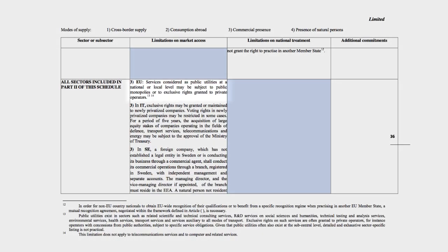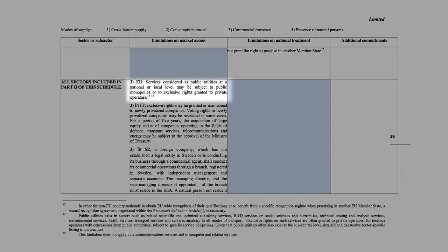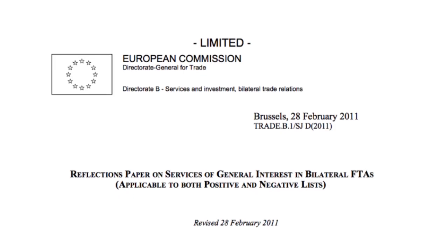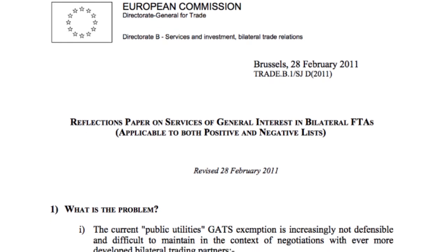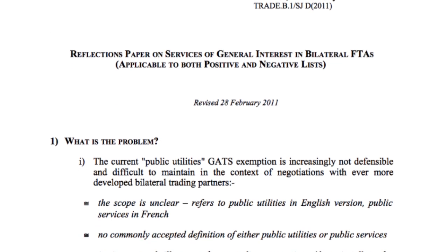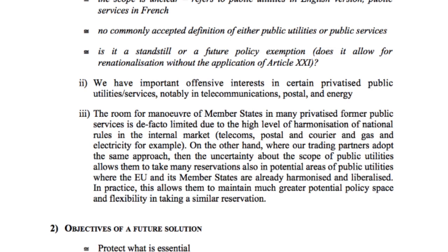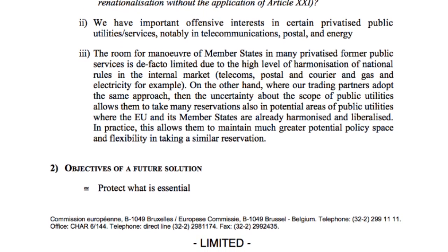What about the Public Utilities Exemption? This is another one the European Commission introduced once they realised the original GATS exemption didn't work. The Public Utilities Exemption can be read on page 36 of the TTIP schedule and page 38 of the TISA schedule. It says that public utilities might still be subject to public monopolies or to exclusive rights granted to private operators. The European Commission says that proves public services are safe. However, back in 2011, the European Commission had already written its own internal documents saying that exemption is no longer strong enough to protect public services in Europe.